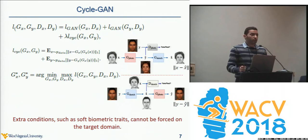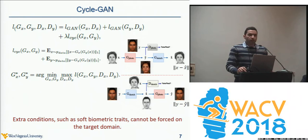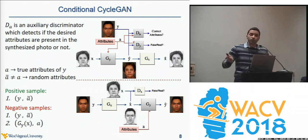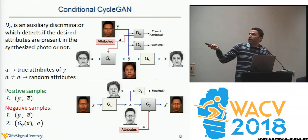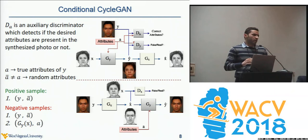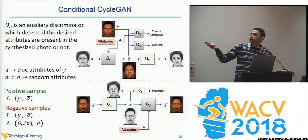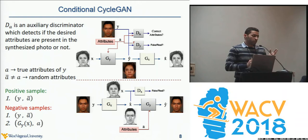That's the whole idea in CycleGAN, but we still cannot condition this process on soft biometrics — and that is the key contribution of our paper. We propose a new version called Conditional CycleGAN. The core idea is that we add an additional auxiliary discriminator to the network. The overall process is almost the same: we start with a hand-drawn sketch, pass it to the first generator, and it synthesizes an image.